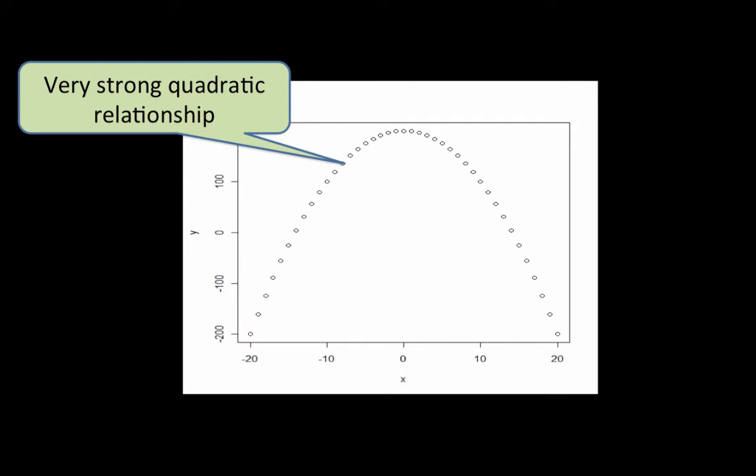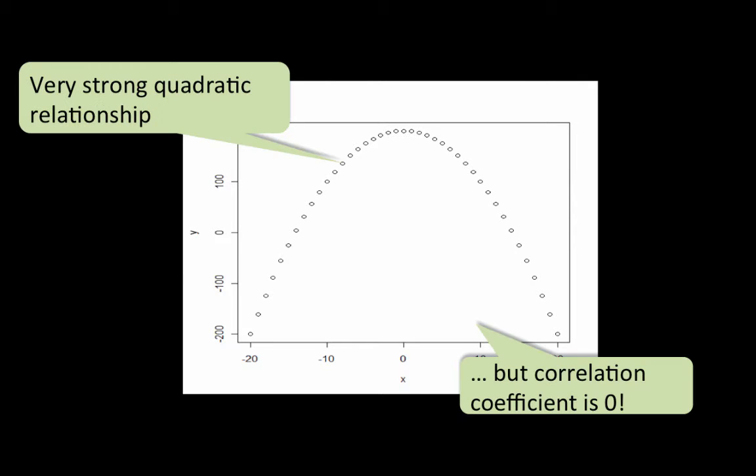Take this example. Here the two variables are extremely well related. You can use the value of x to very accurately predict the value of y, but the correlation coefficient is actually zero. This is a very strong quadratic relationship, but the correlation coefficient is zero. This re-emphasizes the point that correlation coefficient measures the strength of linear relationship.